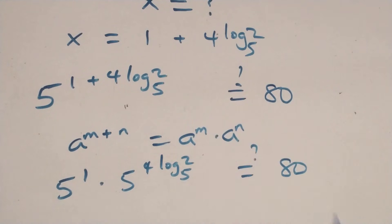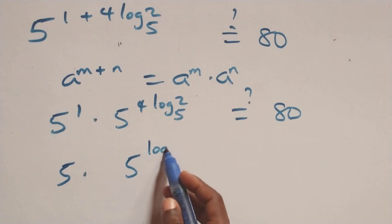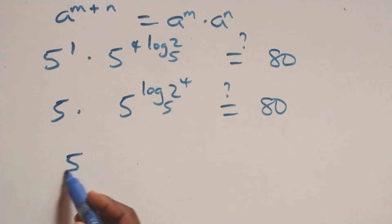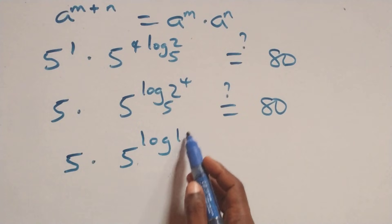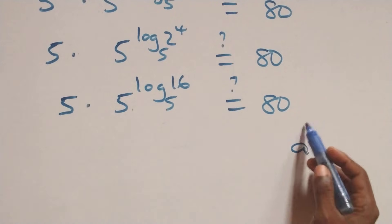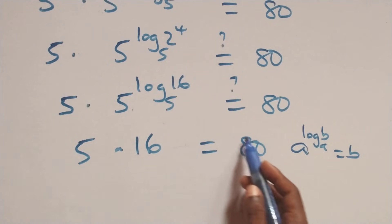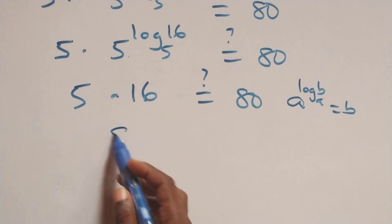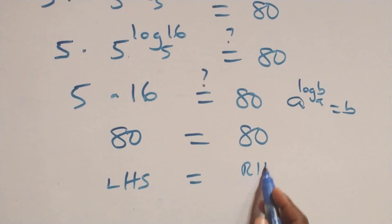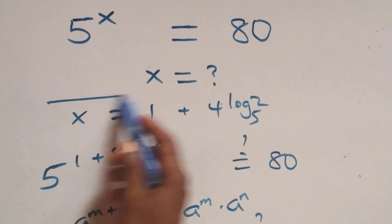We rewrite this as 5 raised to power log of 2 raised to power 4 base 5, which equals to 80 on this side. Then we have 5 times 5 raised to power log of 16 base 5, equals to 80. This follows the identity: a raised to power log b to base a equals to b. Then here we have 5 times 16, which gives us 80, and this equals to 80 from the right hand side. Left hand side equals to right hand side, and therefore we conclude that x equals to 1 plus 4 log 2 base 5 satisfies the problem.